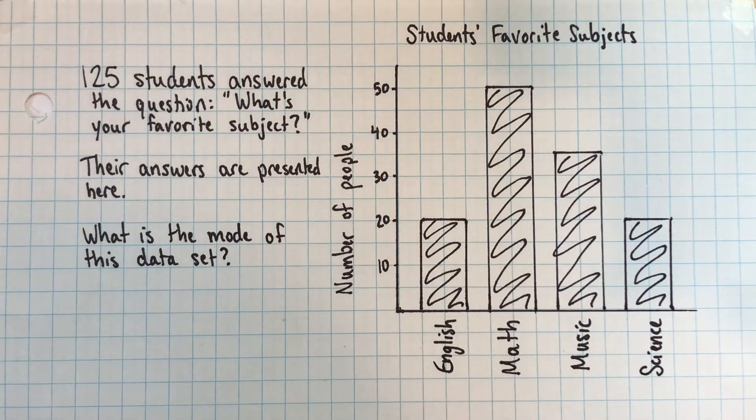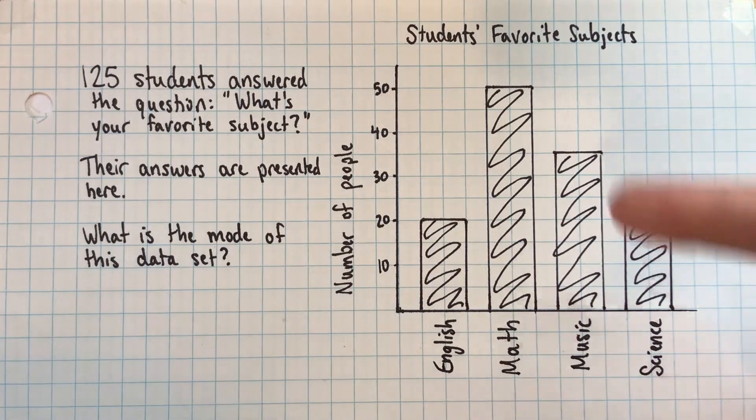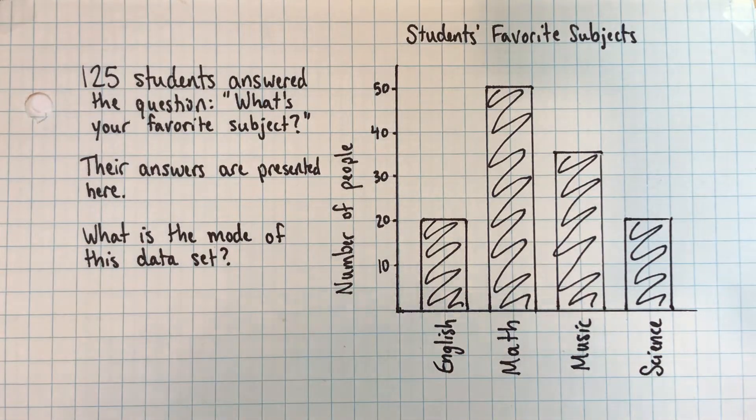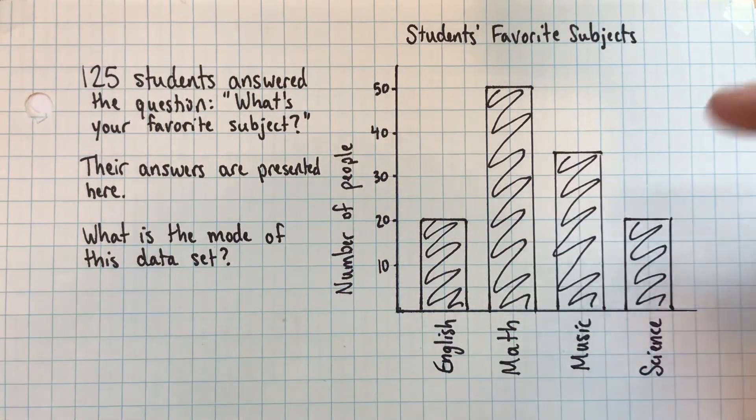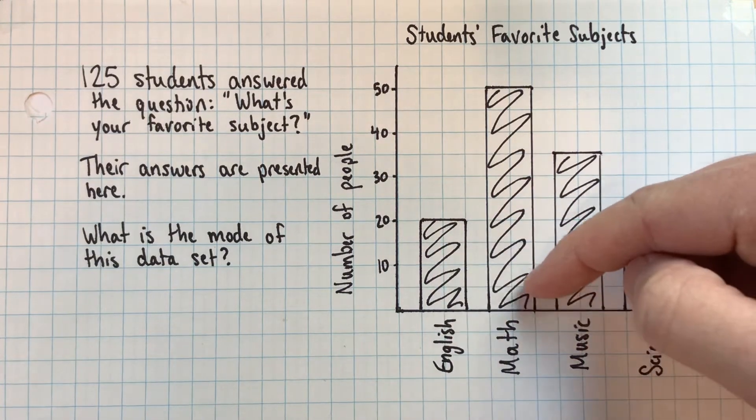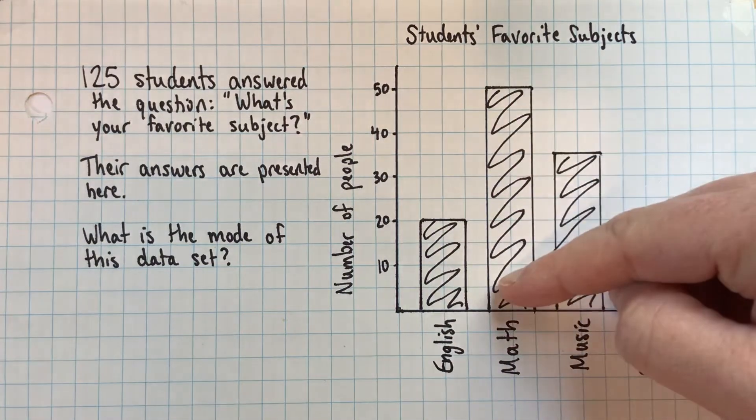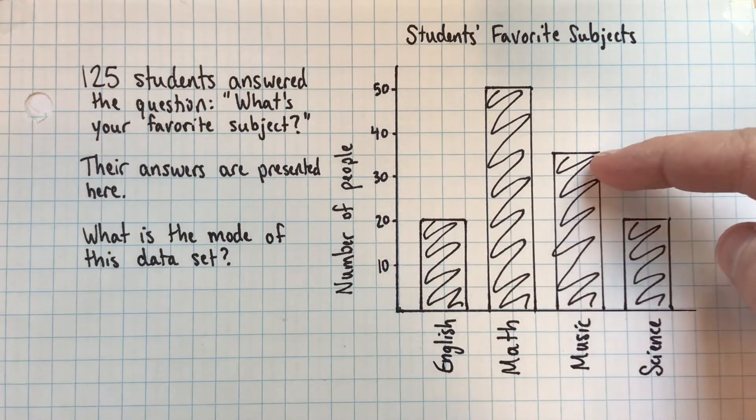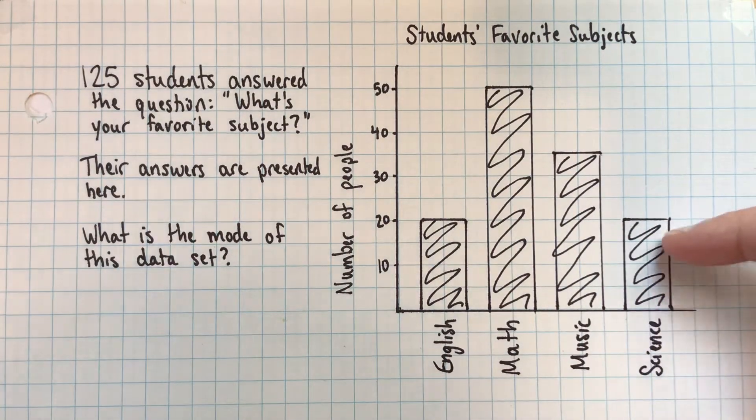The mode is the most common response. If we just made a list of responses instead of representing them in this kind of graph, we'd have English listed 20 times, math listed 50 times, music listed 35 times, and science listed 20 times.